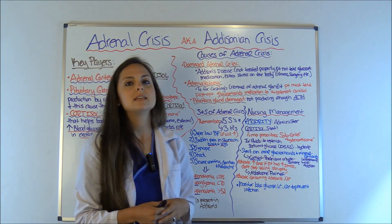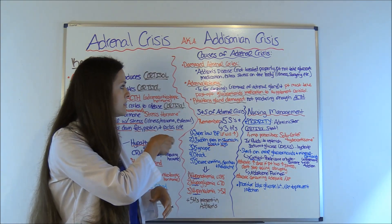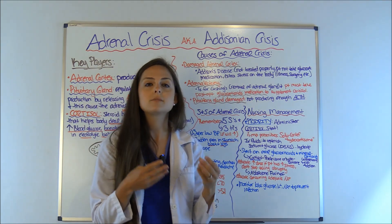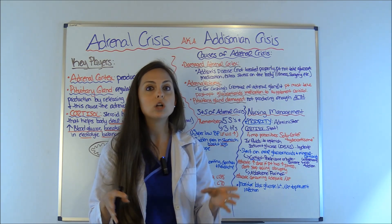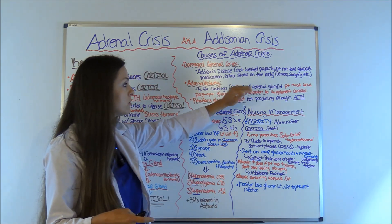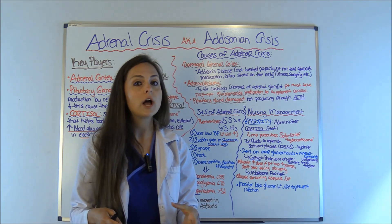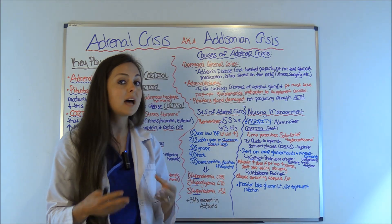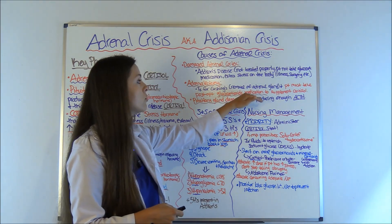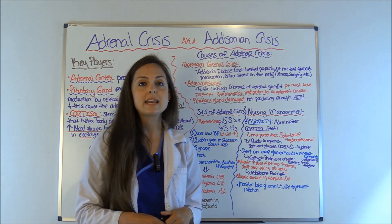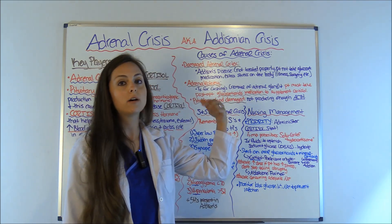Next cause is adrenalectomy — removal of the adrenal glands. In Cushing's disease, this is actually a treatment option because those patients have excessively high cortisol levels. After an adrenalectomy, the patient must supplement cortisol because the body is no longer producing it. So they have to take post-op glucocorticoid medications. If the patient doesn't take them or doesn't understand how important they are, it can flip them into adrenal crisis.